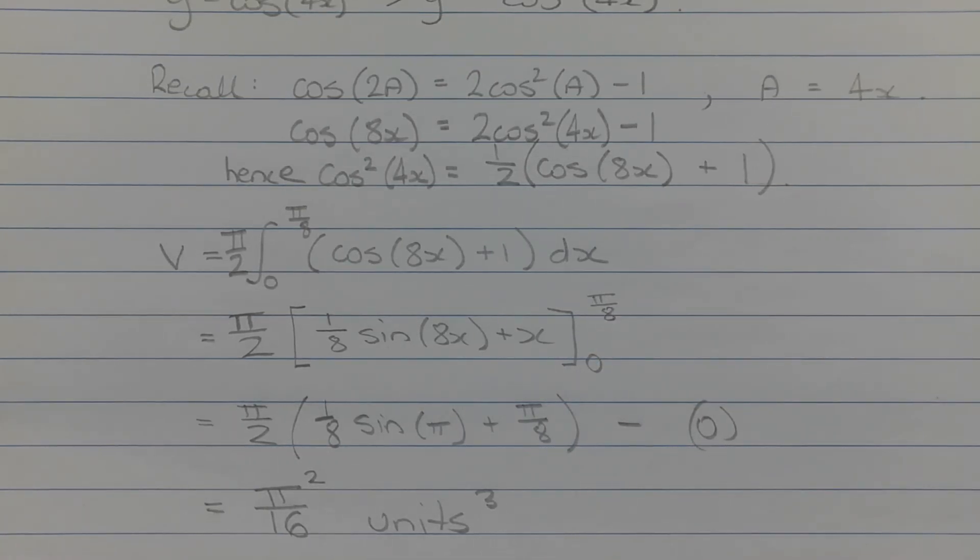Applying the limits of integration, we get pi over 2 times 1 over 8 sine pi plus pi over 8 in brackets minus 0, which equals pi squared over 16 cubic units.